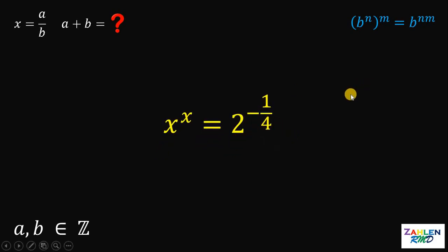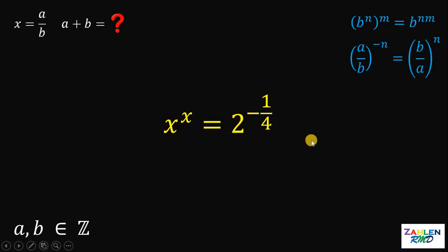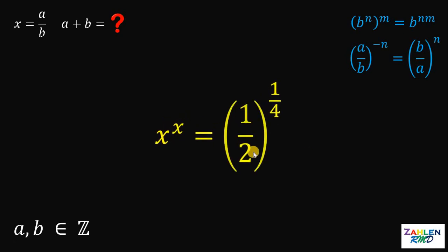Now, recall the negative exponent rule: if we have a over b raised to negative n, it is equivalent to b over a raised to positive n. So, what we need to do here to make the exponent positive is just take the reciprocal of the base. Take note that our base is 2 over 1, so the right-hand side is equivalent to 1 half raised to positive 1 fourth.